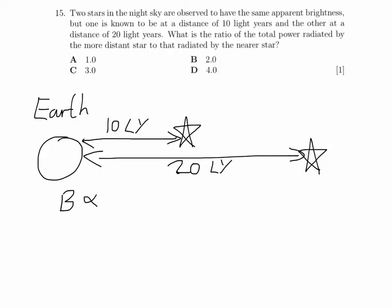So we need to find the ratio of the distance to the more distant star squared to the closest star squared. So the more distant star is 20 light years away, so we're going to do 20 squared divided by 10 squared.